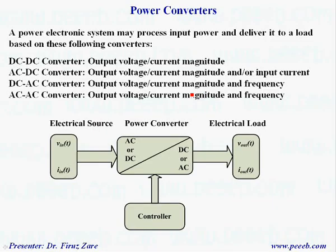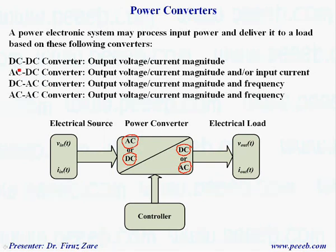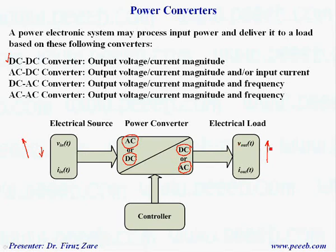A power electronic system may process input power and deliver it to a load based on the following converters. The input source can be either AC or DC, and we can change the power into AC or DC at the output, giving four different combinations. The first is a DC-DC converter — for different applications we can control the output magnitude, for example boosting a low battery voltage or reducing a high rectifier voltage for an electronic system.